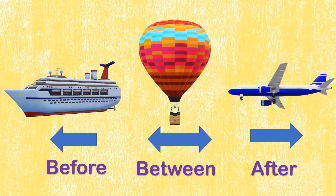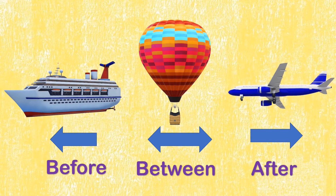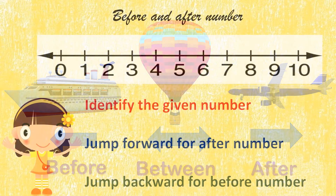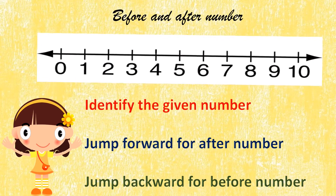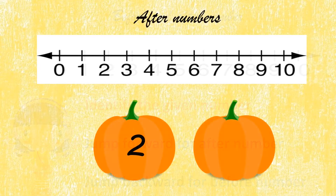The hot air balloon is in between ship and aeroplane. Ship is before the hot air balloon and the aeroplane is after the hot air balloon. This is a number line. Let's understand how to identify before and after numbers on a number line. Identify the given number, jump forward for the after number, and jump backward for the before number.